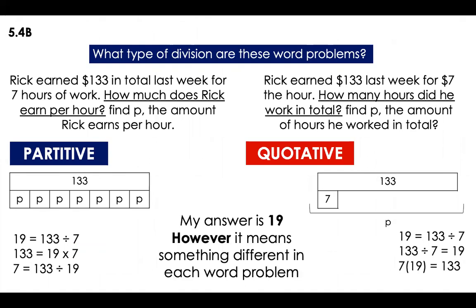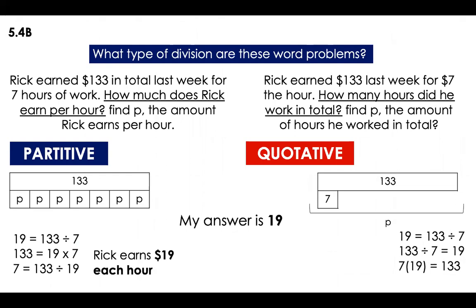Seven times 19 is 133. However, it means something different in each word problem. In the first one, they asked how much does Rick earn per hour — so per hour he earned $19. Each of those P values in my representation is 19. In the second one, Rick worked a total of 19 hours — every hour was $7, and 19 hours was the total. It is important for you to understand when it's partitive and when it's quotative.